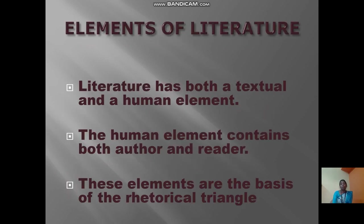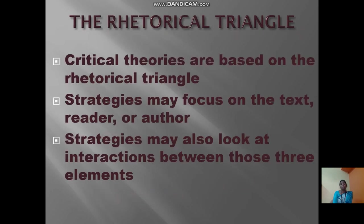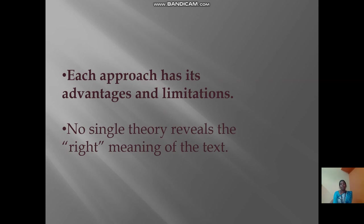The elements of literature include both the text and the human elements. The human element contains both the author and the reader, and these elements are the basis of the rhetorical triangle. Critical theories are generally based on the rhetorical triangle, and the strategist may focus on the text, reader, and author, or may also look at the interactions between those three elements. Each approach has its advantages and limitations.